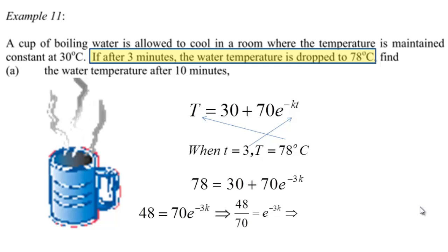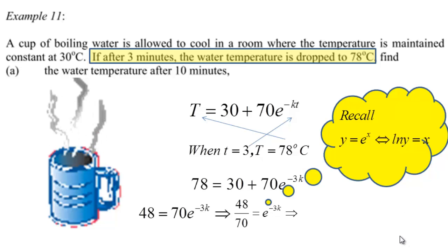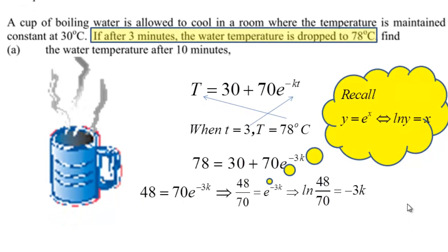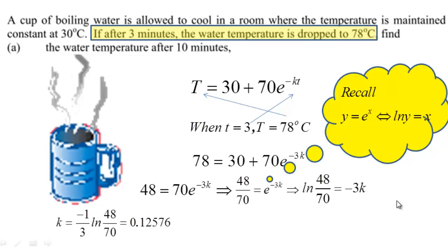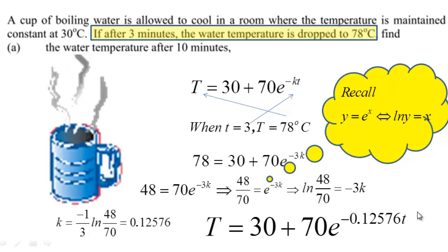Recalling that if y equals e to the power x then ln(y) equals x, we get negative 3K equals ln(48 over 70). Dividing both sides by negative 3, we find the value of K equals negative one-third times ln(48 over 70). Using a calculator, this gives K approximately equal to 0.12576.